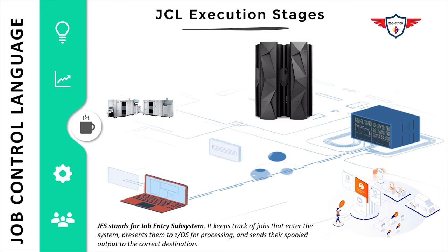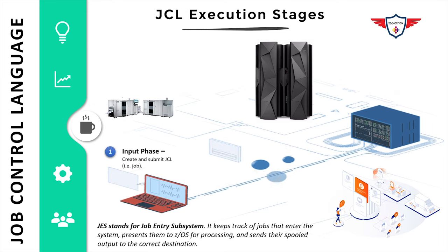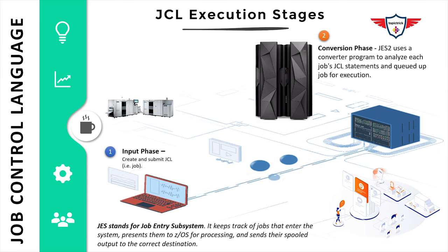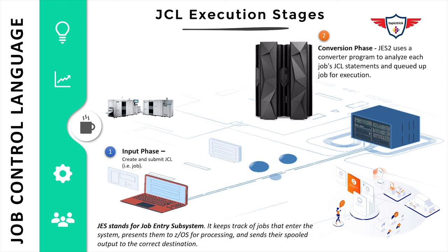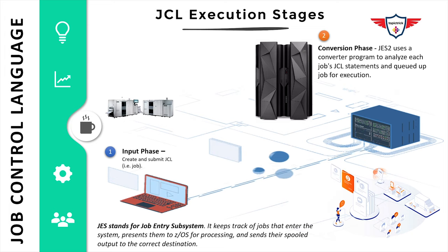The first stage is that you prepare your JCL, include all your steps, and submit the job. The next phase is the conversion phase. In this phase, a converter program analyzes each JCL statement, expands procs from the procedure libraries, and if there are no errors, queues up the job for execution.